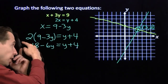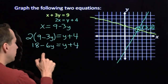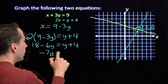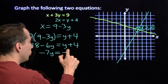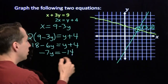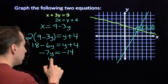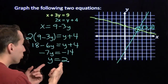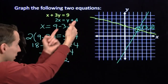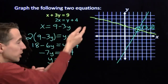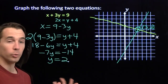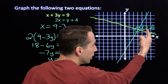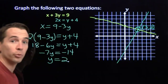Subtract y from both sides, subtract 18 from both sides, we get negative 7y equals negative 14. Divide both sides by negative 7 — sure enough, we get y equals 2. Stick that back into the equation, we'll get 2x equals 6, which gives us x equals 3. There's our point: (3, 2).